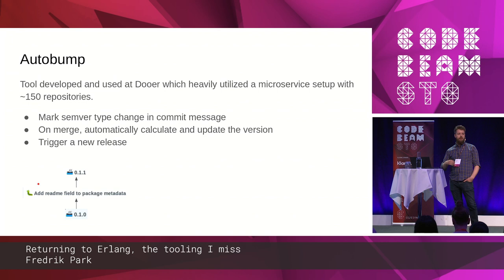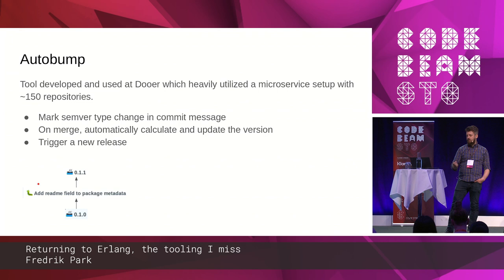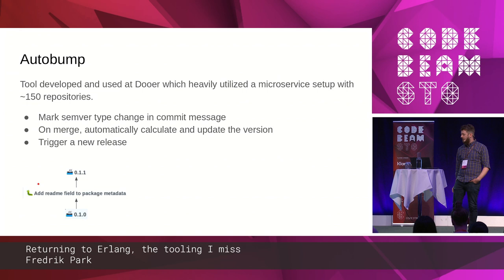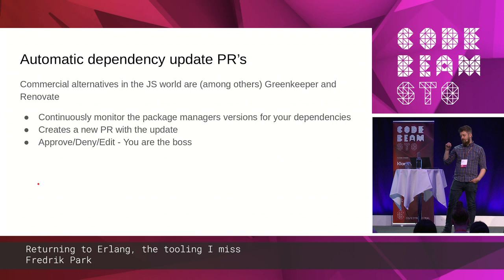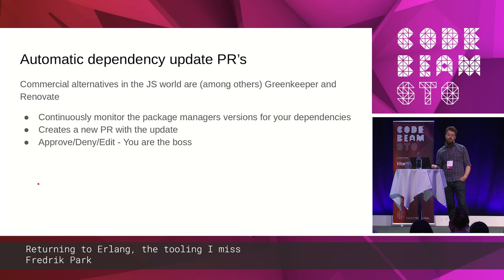This might seem a bit unnecessary to release new code this often, but it was really nice because when you went to update something, you had a really small review to do. In this example, someone has just added something to the readme, so you just verify that it's only the readme that's changed and then update the dependencies really fast. But as you can imagine, having 150 repositories doing these small changes for just readme stuff became really tedious. So in order to take more advantage of this automatic releasing of packages, we also introduced systems for automatically updating dependencies in our services.